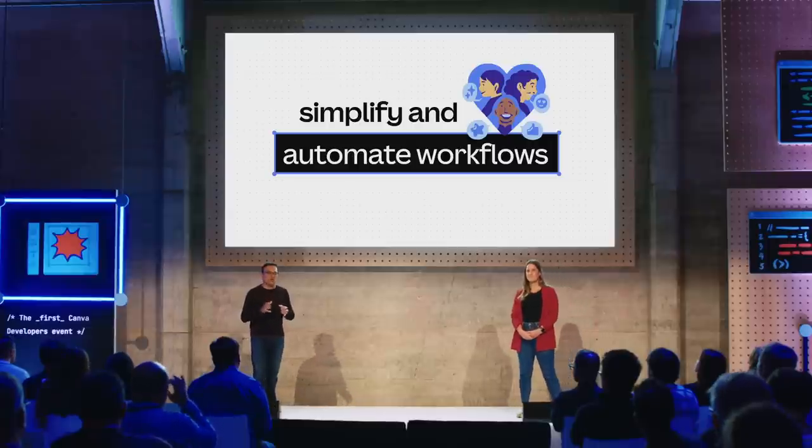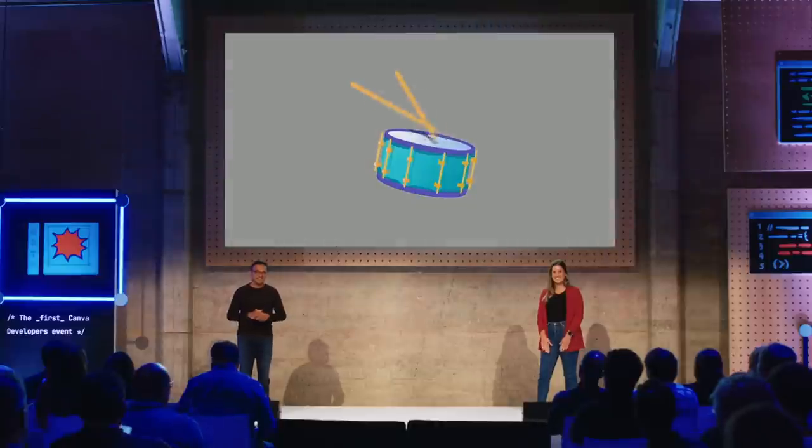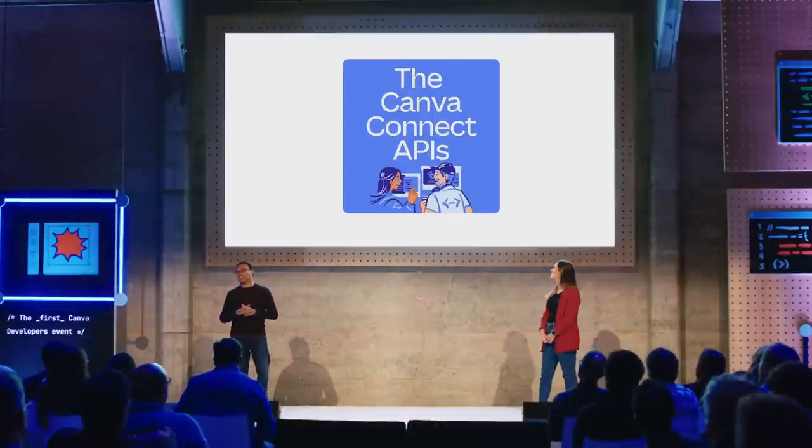We've talked a lot about how you can create incredible apps using the Canva Apps SDK. But Canva is just one of the many tools that designers and their teammates use every day. We need a way to make it seamless for people to use Canva when working with other tools — a way to simplify and automate workflows so that teams using Canva can give them access to what they need, where they need it, without jumping between Canva and other apps. Today, we're launching a second set of developer APIs — the Canva Connect APIs.